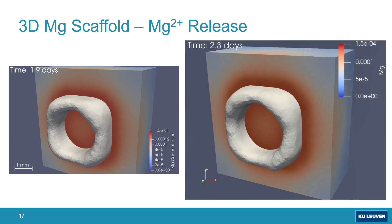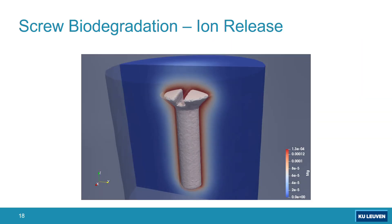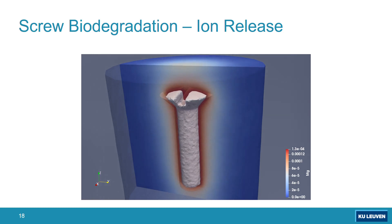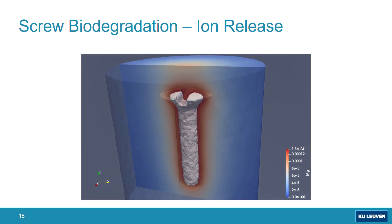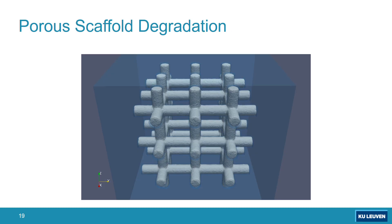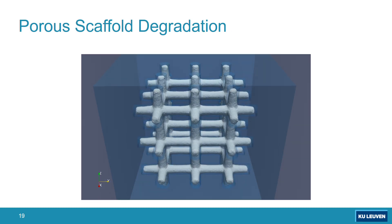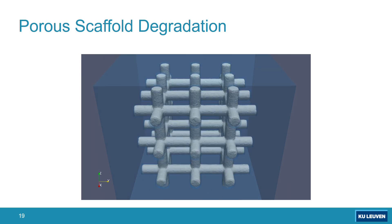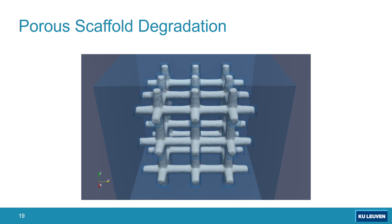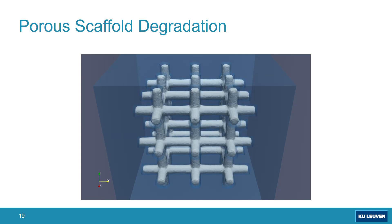This is also shown for a simple 3D screw in a cylindrical domain — again showing the release of magnesium. This is a visualization of the level set function for a porous scaffold, and you can compare the degraded shape with the initial shape using transparent surfaces.